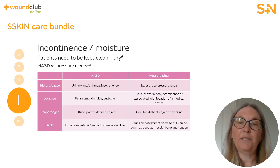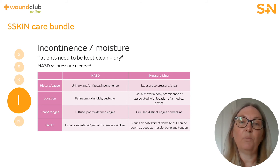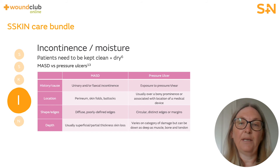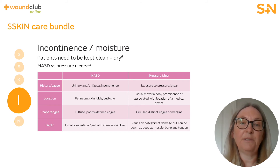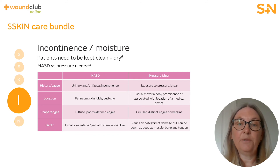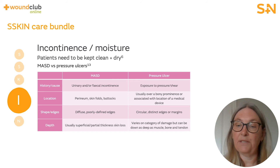Location: pressure ulcers are usually over bony prominences, whereas incontinence associated dermatitis (IAD) is generally across a wider area of the buttocks, genitals and inner thighs. Shape: pressure ulcers tend to be singular and have distinct edges, whereas IAD usually presents as multiple lesions with irregular edges. Depth: moisture lesions are usually superficial or partial thickness skin loss, whereas a pressure ulcer varies on the amount of tissue damage.